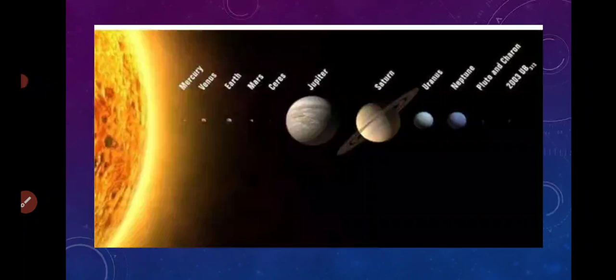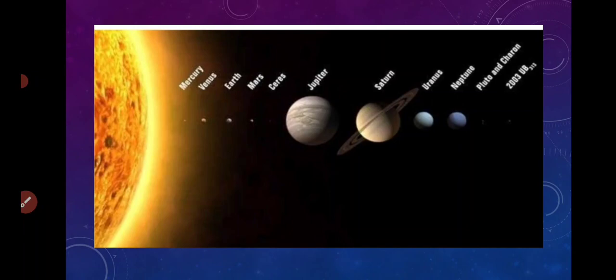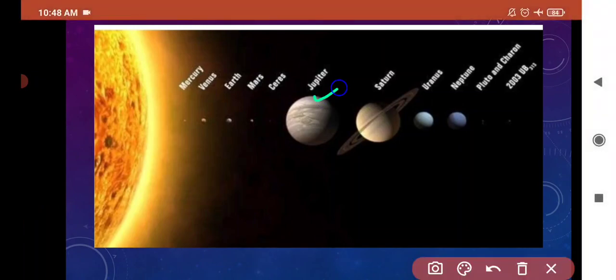Let's discuss the solar system. The sun and eight planets form the solar system. Sun اور ان کے ساتھ 8 planets مل کر solar system form کرتے ہیں. The names of the eight planets are Mercury, Venus, Earth, Mars, Jupiter, Saturn, Uranus, and Neptune.